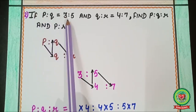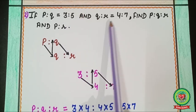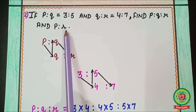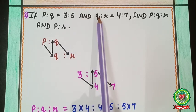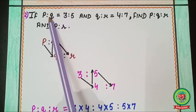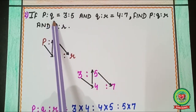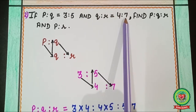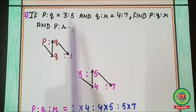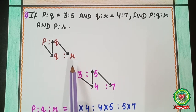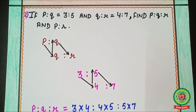Next example: if p ratio q = 3 ratio 5 and q ratio r = 4 ratio 7, find p ratio q ratio r and p ratio r. We notice that q is repeating but has different values: q is 5 in the first ratio and 4 in the second. To solve this, we use the N method.